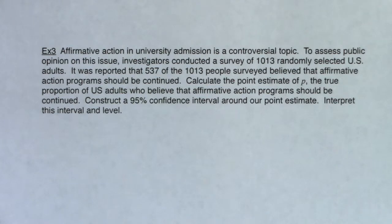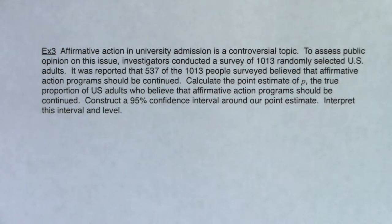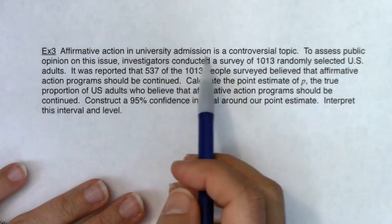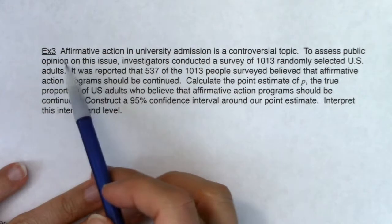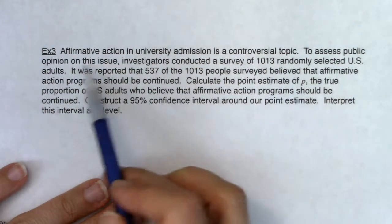We're going to construct a confidence interval together, step by step, so you can see what a correct write-up looks like. The first question to ask is: which land am I in — mean land or proportion land? At the end I'll also show you how your calculator can help you do this more efficiently, but the write-up is still required.